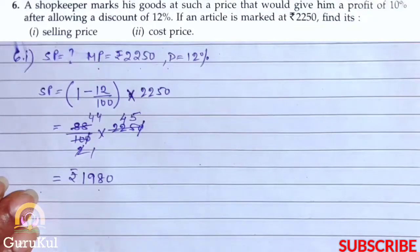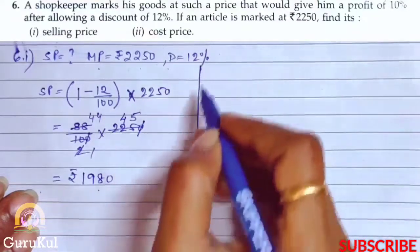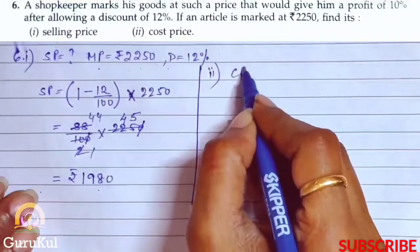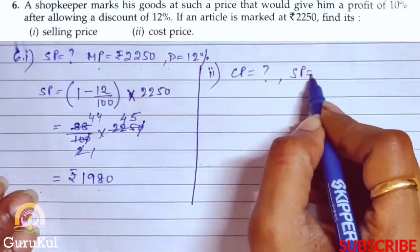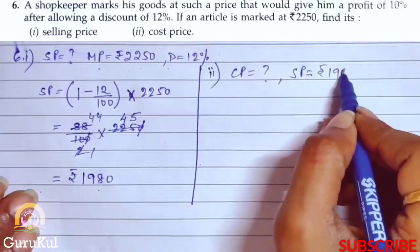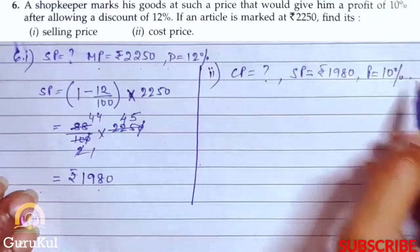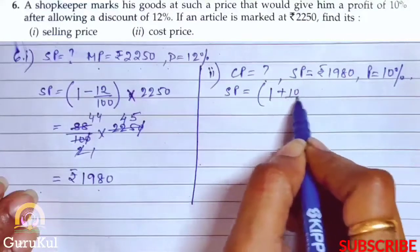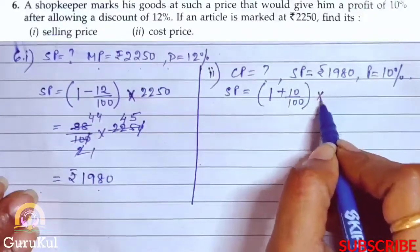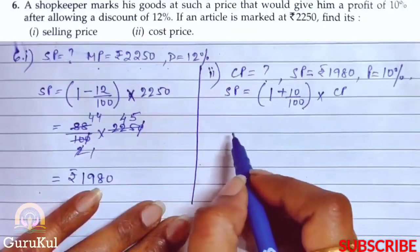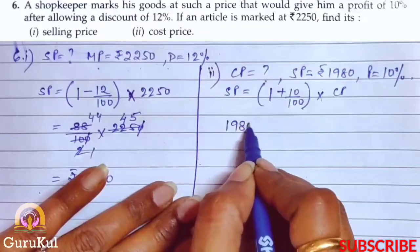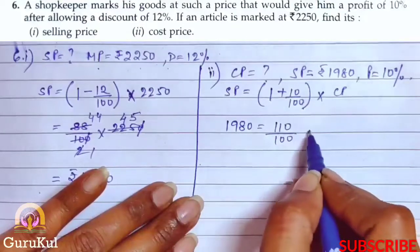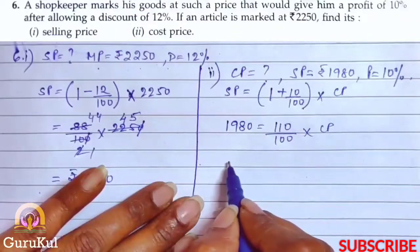It is said that even after giving discount, the shopkeeper makes a profit of 10%. So now we need to find the cost price. Second part of question number 6, we need to find the cost price when selling price is rupees 1980 and profit is 10%.